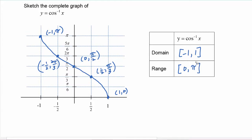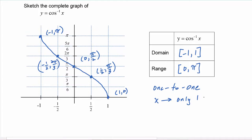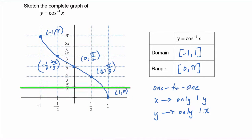Cosine inverse is a one-to-one function. That means every x maps onto only one y, and every y maps onto only one x. This graph passes the vertical line test and it passes the horizontal line test; therefore cosine inverse is one-to-one.